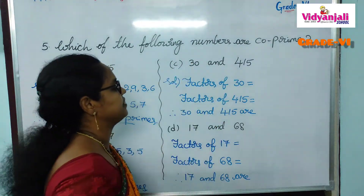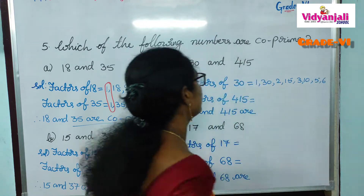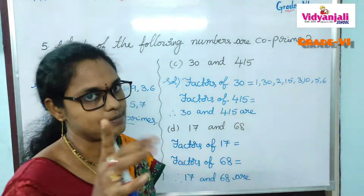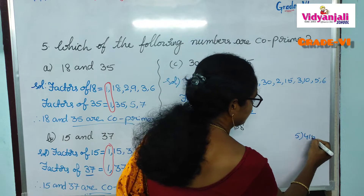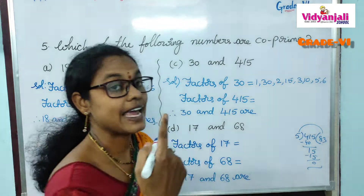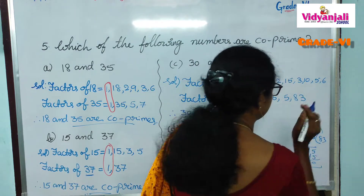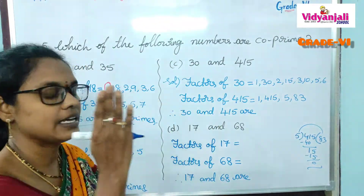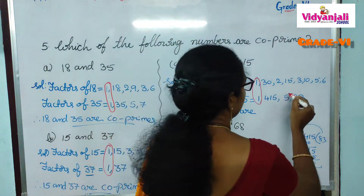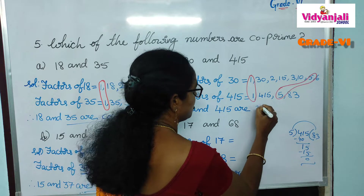Next pair: 30 and 415. Factors of 30 are 1, 2, 3, 5, 6, 10, 15, and 30. For 415: since it ends in 5, it comes in the 5 times table. 5 times 83 is 415. Both 5 and 83 are prime numbers, so factors of 415 are 1, 5, 83, and 415. The common factors of 30 and 415 are 1 and 5. Since they share a common factor other than 1, 30 and 415 are not co-primes.